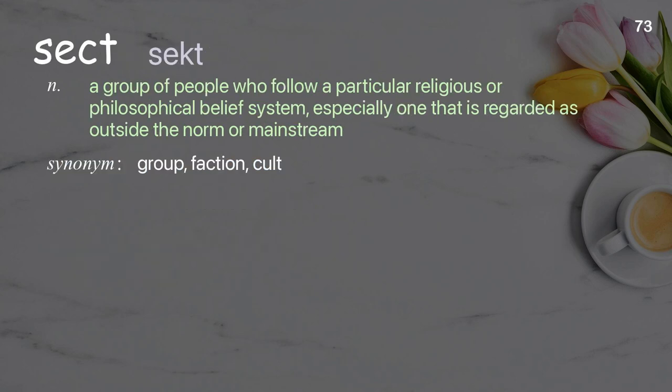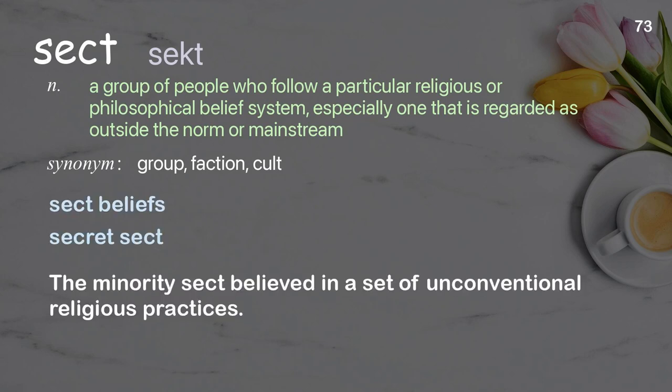Sect. A group of people who follow a particular religious or philosophical belief system, especially one that is regarded as outside the norm or mainstream. Examples: sect beliefs, secret sect. The minority sect believed in a set of unconventional religious practices.